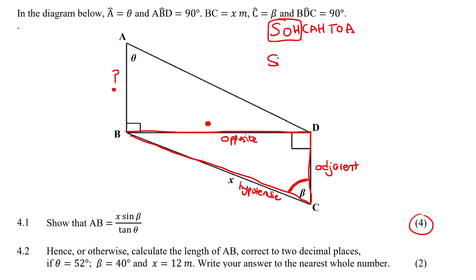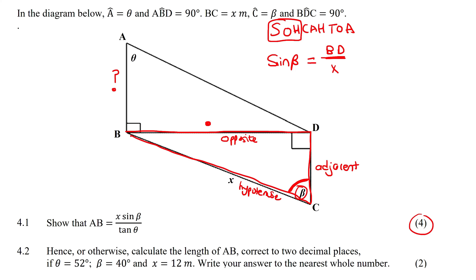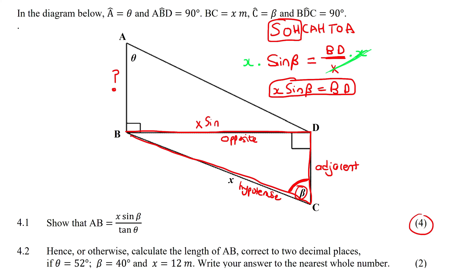So we're going to say sin of the angle — sin beta — equals the opposite, which is the length BD, over the hypotenuse, which is x. All I'm going to do now is get BD by itself. I need to get rid of this x, so I'm going to multiply both sides by x. These two cancel each other out, and now I'm left with BD equals x sin beta. So look at that — we have found BD. Now I can fill BD in as x sin beta.